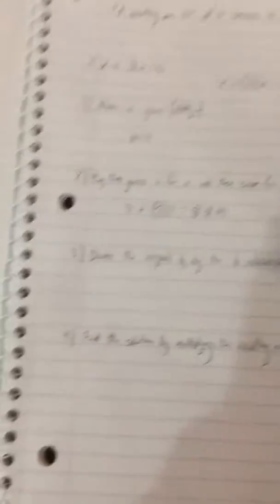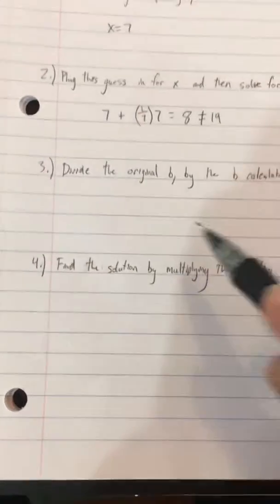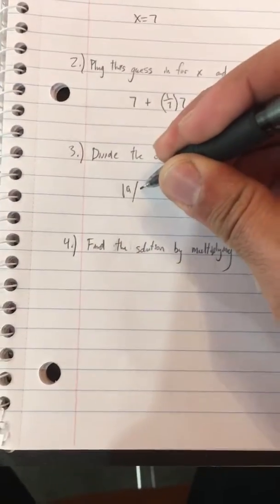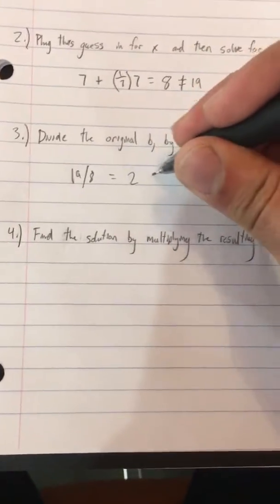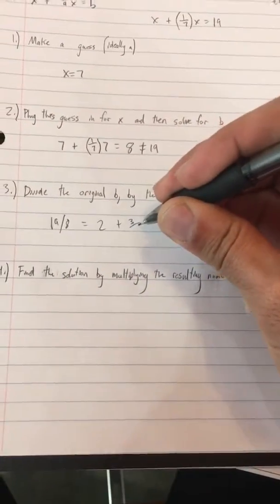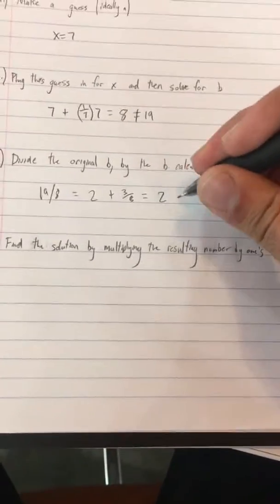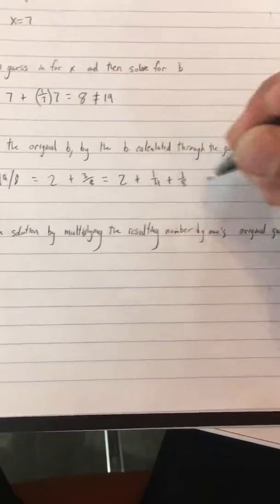And now, what we want to do from here is you want to divide our original b, 19, by this b that we just calculated through our guess, which is 8. And so we would take 19 divided by 8. And that'll give us 2 plus 1/4 plus 1/8.